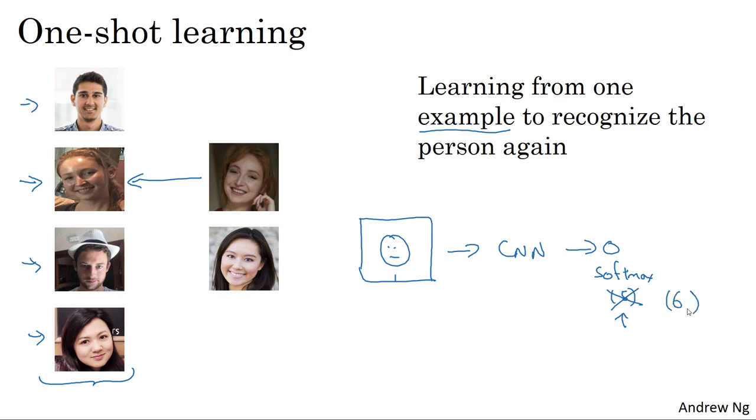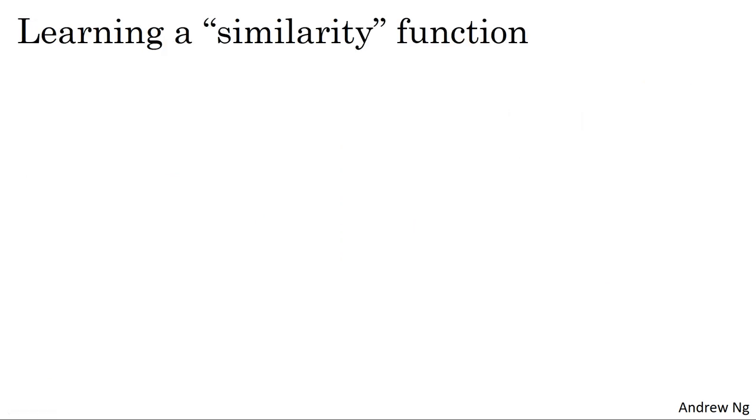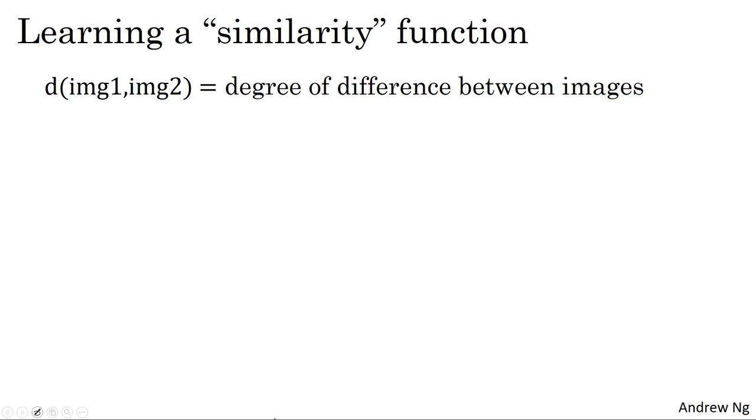So to carry out face recognition, to carry out one-shot learning, instead, to make this work, what you're going to do is learn a similarity function. In particular, you want a neural network to learn a function, which we'll denote D, which inputs two images and outputs the degree of difference between the two images. So if the two images are of the same person, you want this to output a small number. And if the two images are of two very different people, you want it to output a large number.